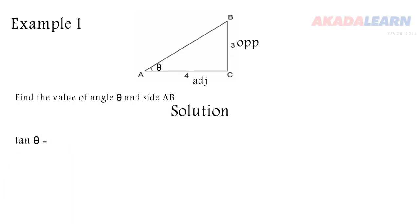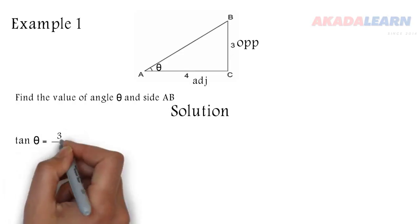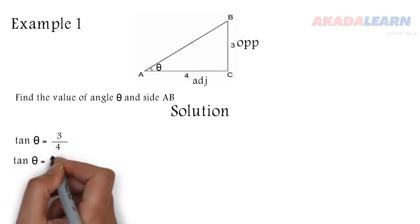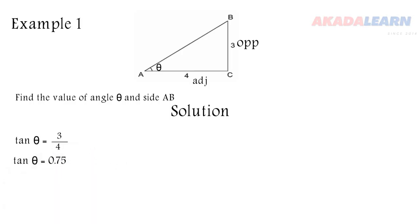So it means we are going to use our tan because we are taking the ratio of opposite and adjacent. So tan theta is 3 over 4. 3 over 4 is 0.75. Now to get our theta, we take the tan inverse of 0.75, and we discover that our theta is 36.8 degrees.